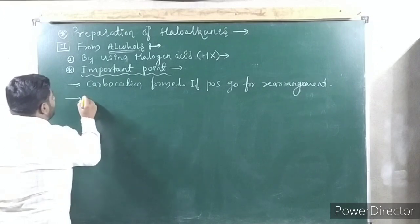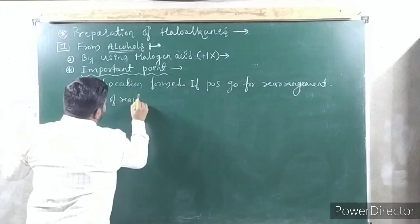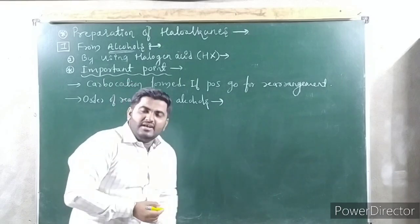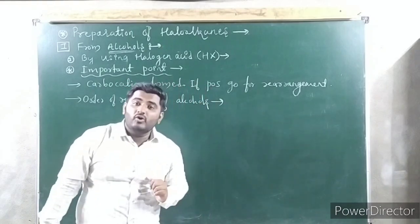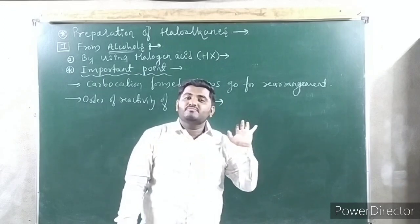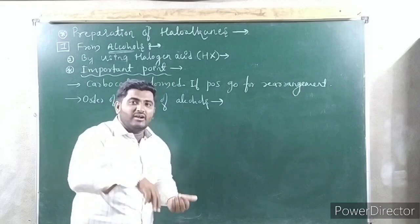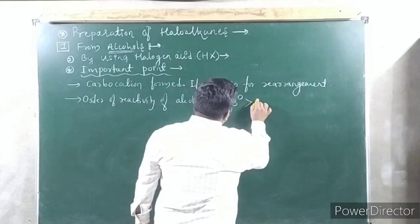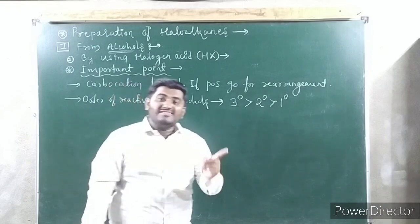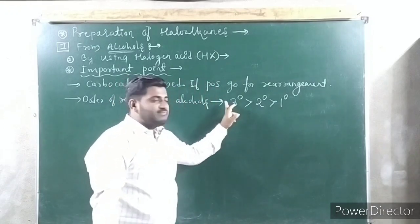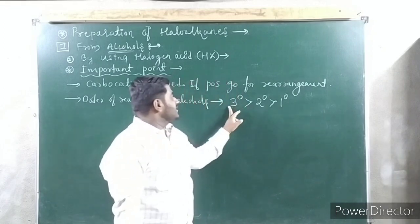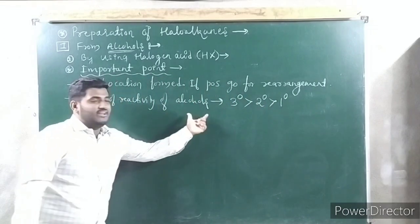Second point: order of reactivity of alcohols. Which alcohol reacts faster? Since carbocation formation takes place here, the alcohol that forms a tertiary carbocation will be faster. Tertiary alcohol forms a tertiary carbocation, which is more stable. Therefore, the order is: tertiary > secondary > primary. This is the order of reactivity of alcohols for this reaction.